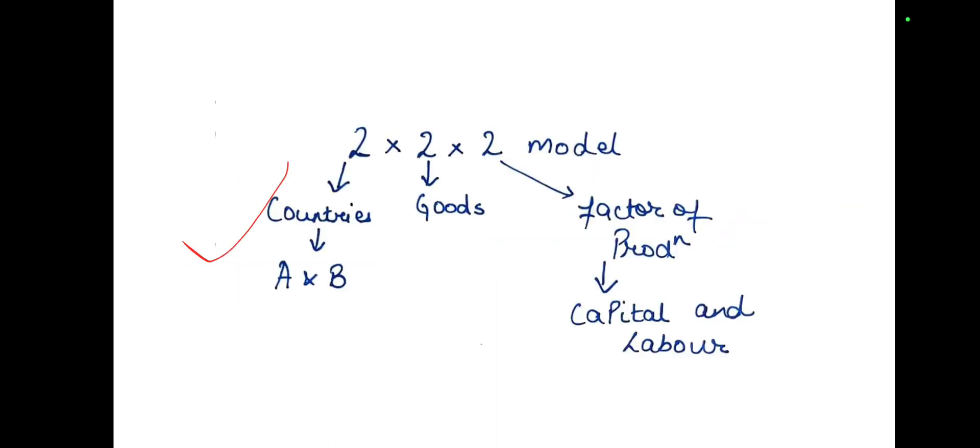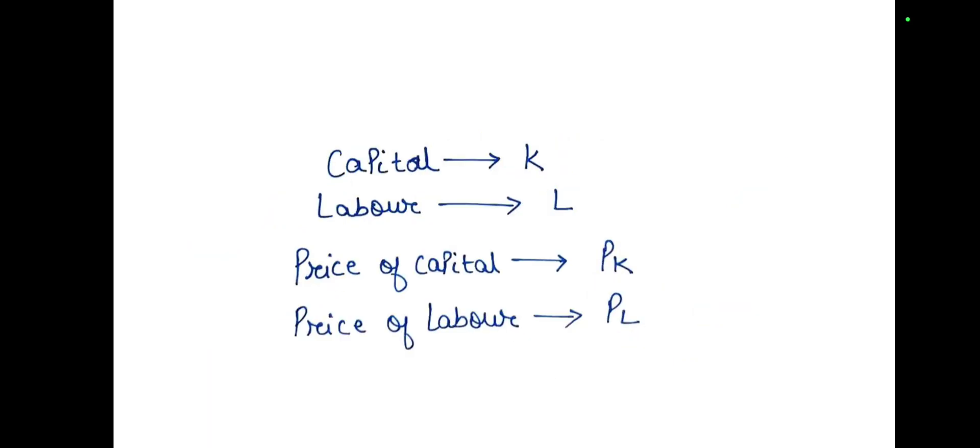This model, Heckscher-Ohlin model, is a 2 into 2 into 2 model which means we have 2 countries say A and B, 2 goods and 2 factors of production capital and labour. Here we are denoting capital with K, labour as L, price of capital PK and the price of labour PL.